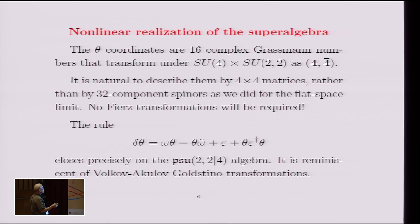Well, one of the curious facts is when you use matrices rather than spinors, you never need to invoke Fierz identities in any of the derivations, whereas even in flat space, we did have to use them. And they can get tricky sometimes. So here's the punchline: if we ask how these things should transform under an arbitrary element of the PSU(2,2|4) algebra, we get the following terms.